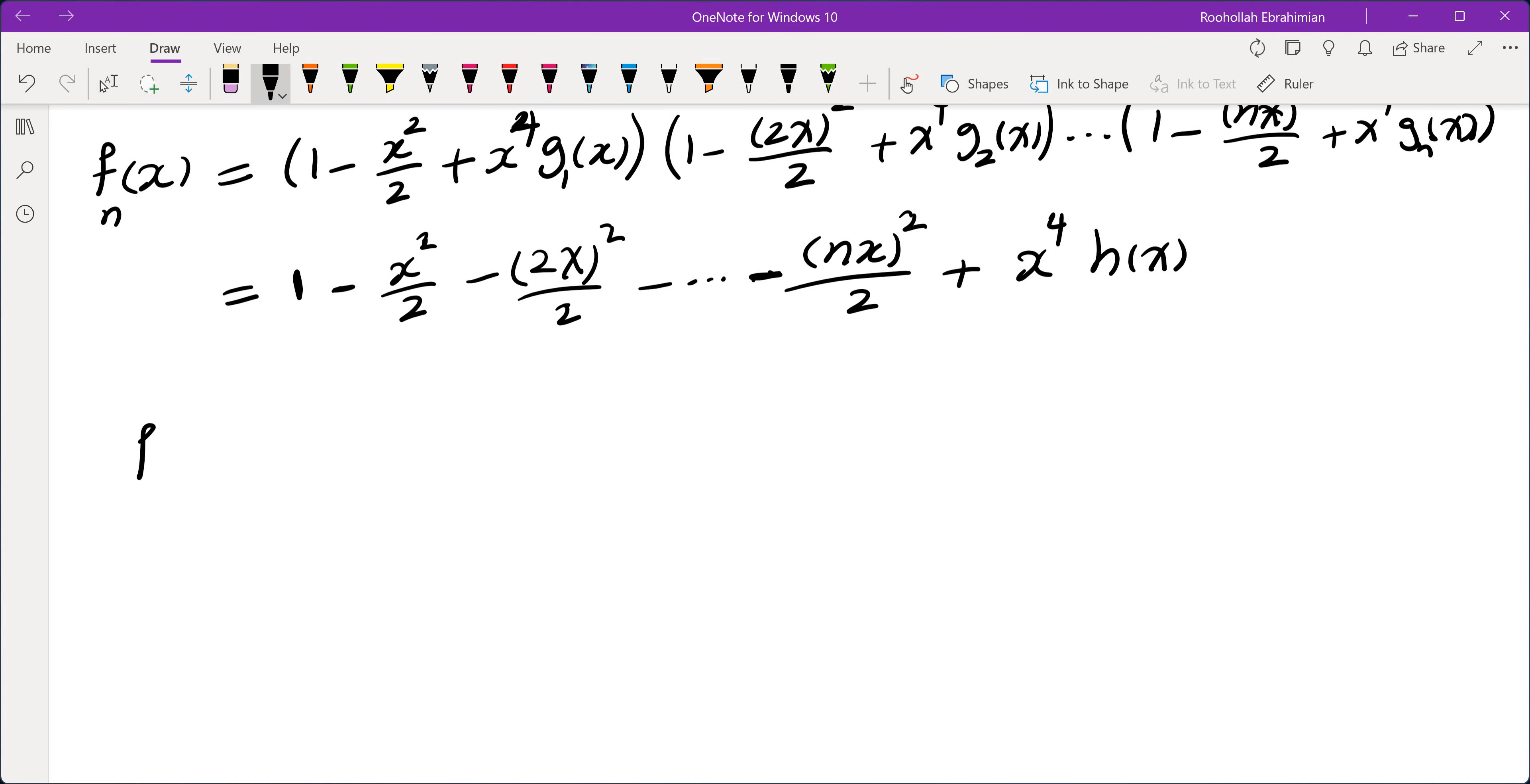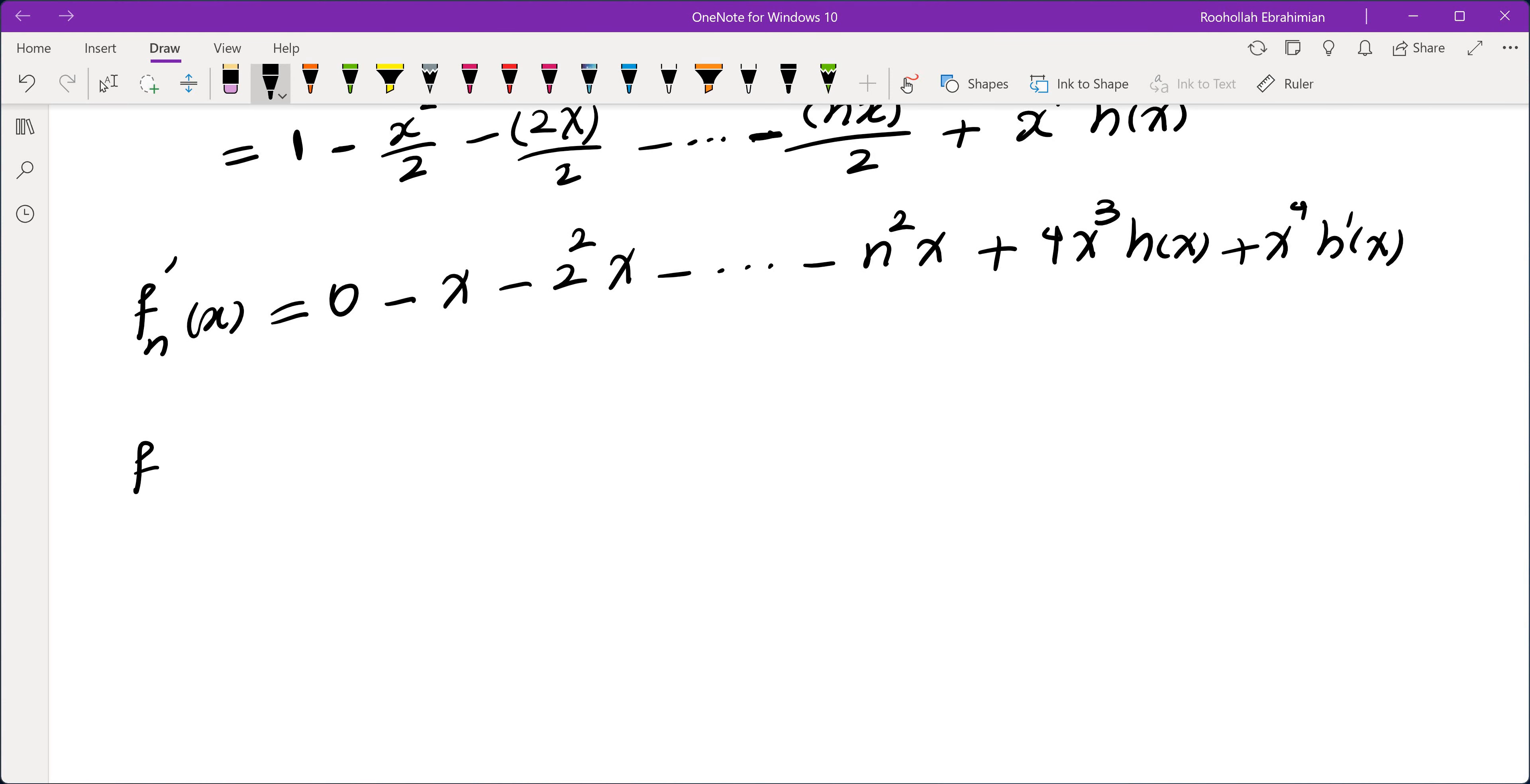When you differentiate this one, you get f_n'(x) equals, the first term is going to be 0. So this one is going to be minus x(1^2 + 2^2 + ... + n^2). And then this term is going to be 4x^3 h(x) plus x^4 h'(x).